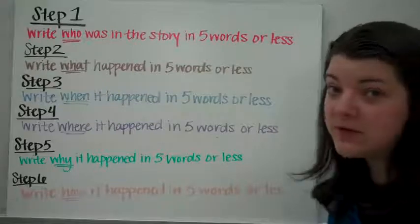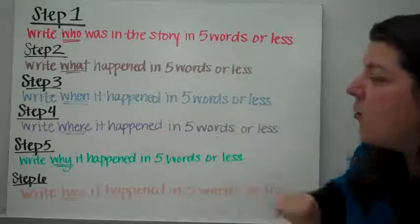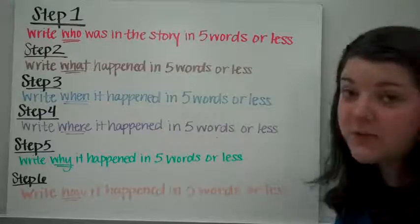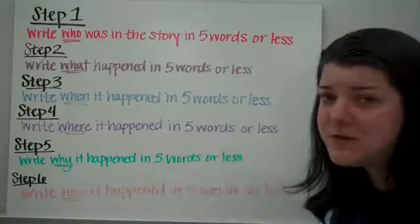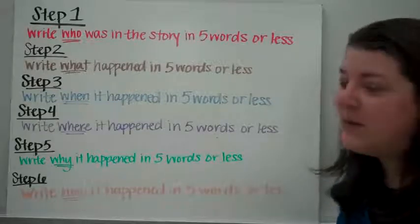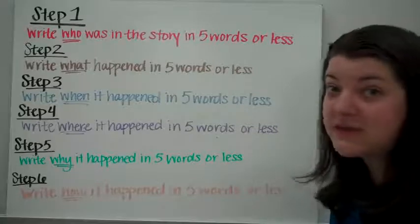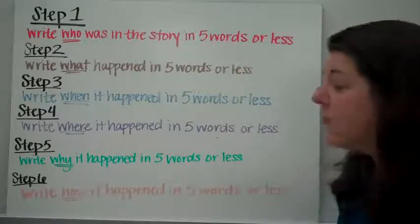When it happened in five words or less. You can probably get this one in three words. Where it happened in five words or less. Again, you can probably get this one in one to two words. And step five, write why it happened in five words or less. That one's going to be a tricky one. It'll take you probably close to all five words.